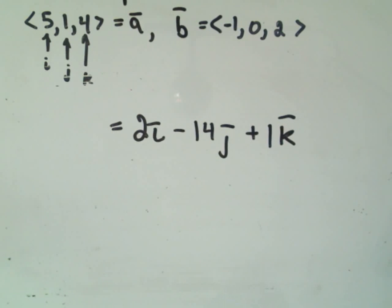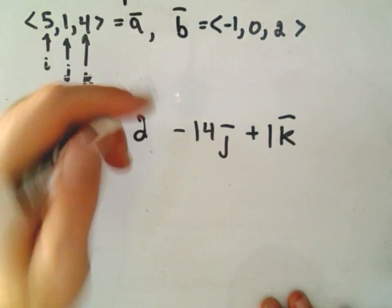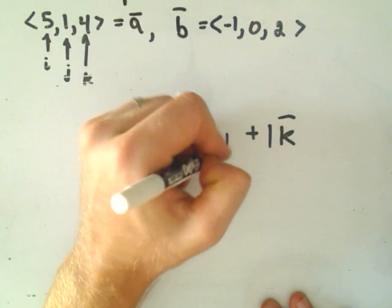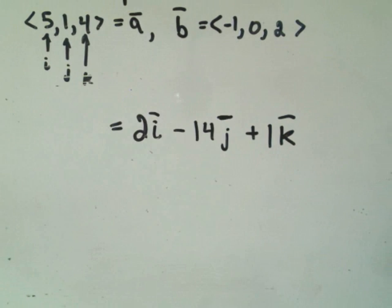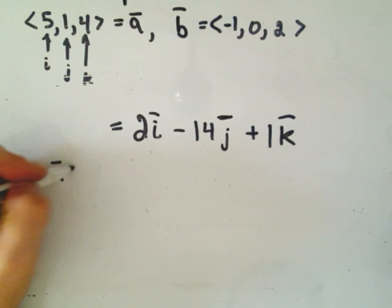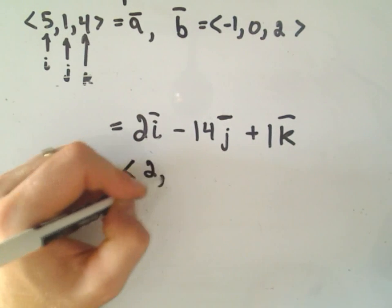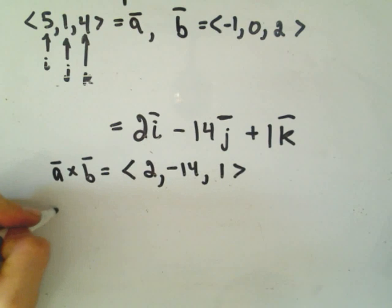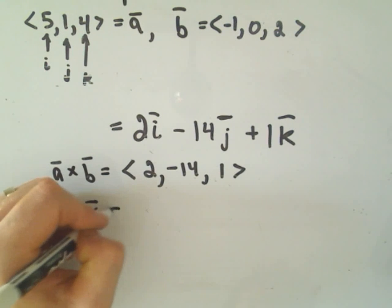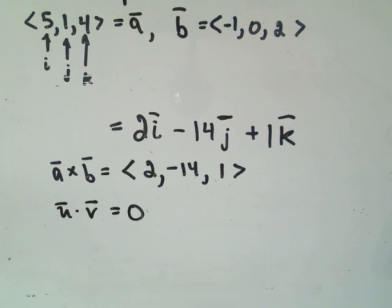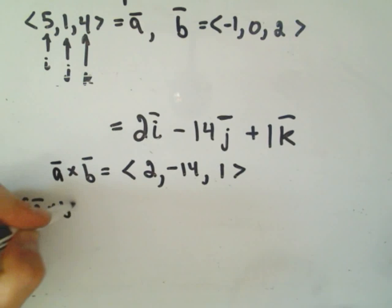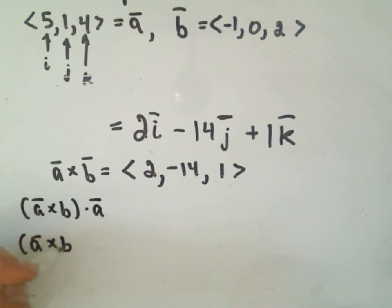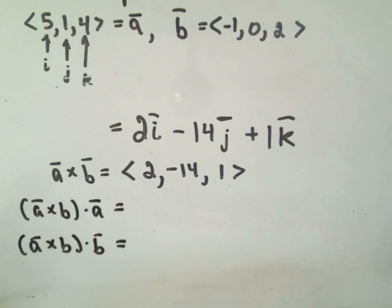One way you can check to make sure that you have calculated this cross product correctly, you know, if you're taking a test or maybe you've got a second to check things. Remember we said the cross product is orthogonal to both A and B. And remember two vectors, U and V, are orthogonal if their dot product equals 0. So one thing you could do is simply take the dot product of the vector A cross B. You could dot that with vector A. You can take A cross B, dot it with vector B, and see that you get out the value 0. If not, something's wrong.